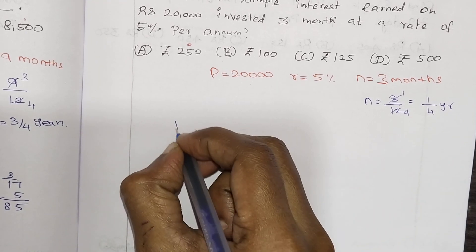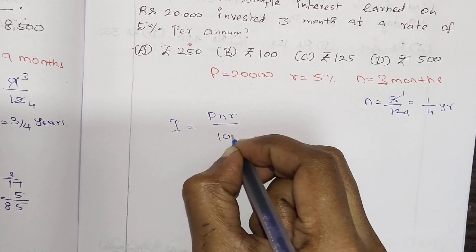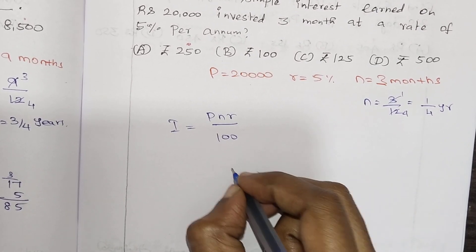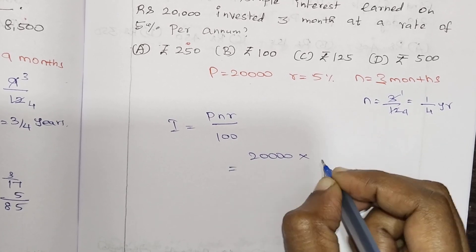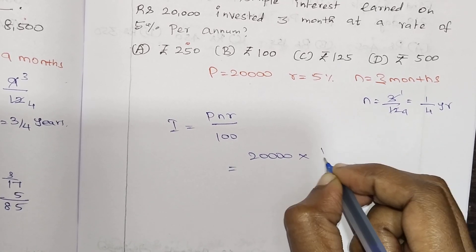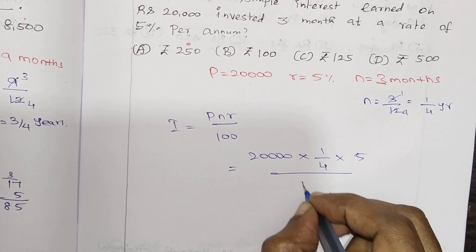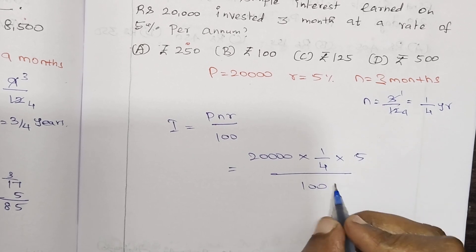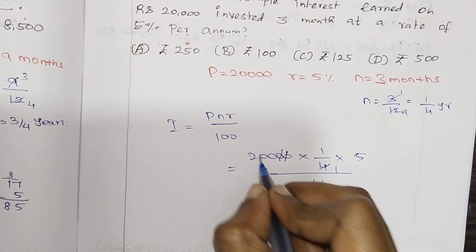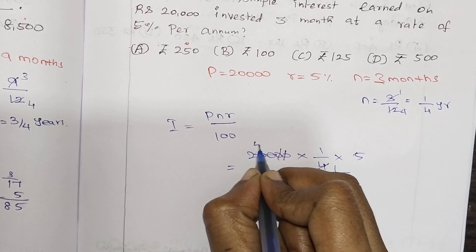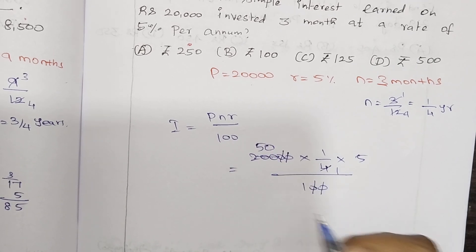I will substitute in the formula. I equals PNR by 100. I equals P, which is 20,000. N equals 1 by 4. R equals 5. Divided by 100. 1 times 0 is 0, 2 times 0 is 0. 1 times 4 is 4. 5 times 4 is 20.